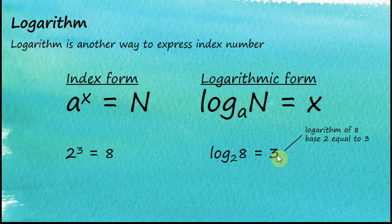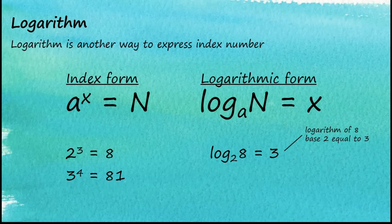Let's see another example. 3 to the power of 4 equals 81. In logarithmic form we write this as log base 3 of 81 equals 4. So the logarithm of 81 base 3 equals 4.